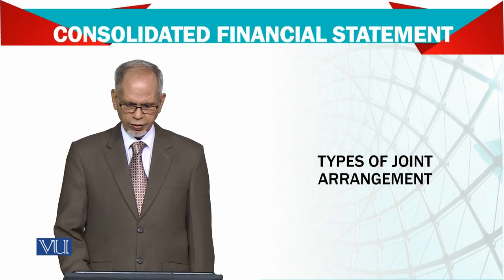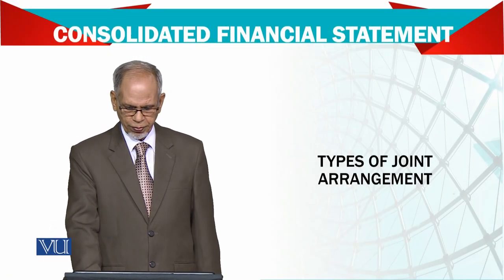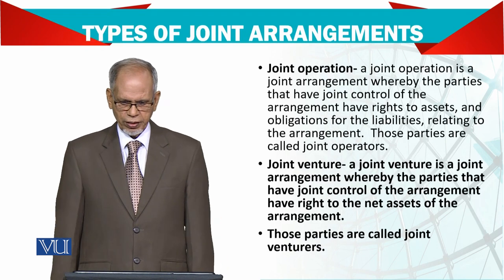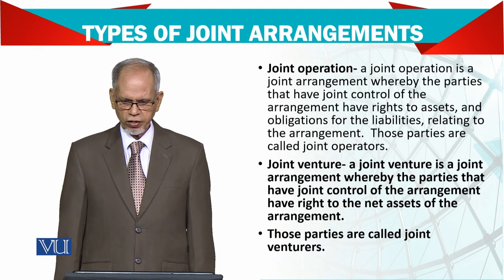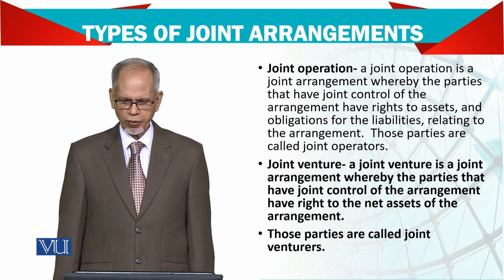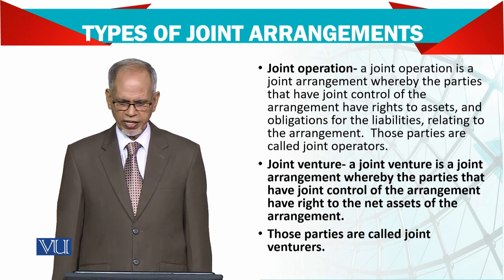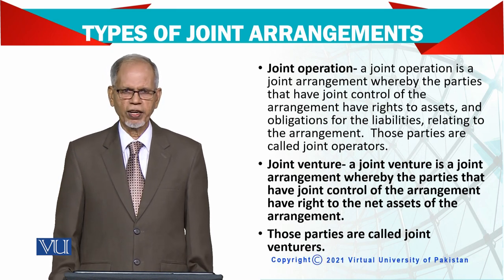Types of joint arrangements. Joint operation: a joint operation is a joint arrangement whereby the parties that have joint control of the arrangement have rights to assets and obligations for the liabilities.